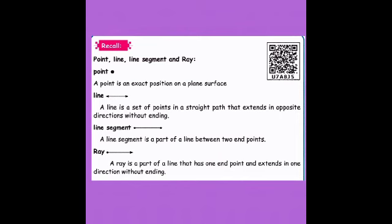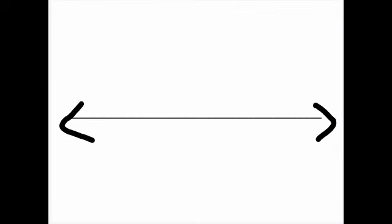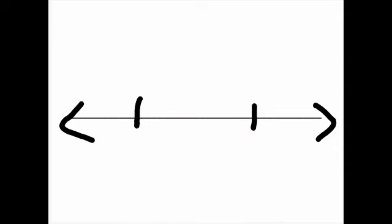Moving on to the next: a line segment. A line segment is a part of a line between two end points. A line extends in both directions, but a line segment is a measured portion of that line, so it cannot extend indefinitely — it has a definite length.